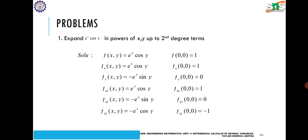Differentiating f with respect to x: f_x(x, y) = e^x·cos(y), since differentiating e^x gives e^x. Then f_y(x, y) = −e^x·sin(y), since differentiating cos(y) gives −sin(y). Again differentiating: f_xx(x, y) = e^x·cos(y), f_xy(x, y) = −e^x·sin(y), and f_yy(x, y) = −e^x·cos(y), since differentiating sin(y) gives cos(y).